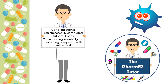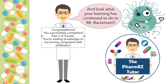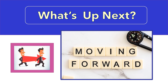Congratulations — you've successfully completed part 2 of 4 parts and you're adding knowledge to becoming competent with antibiotics. This completes the review of gram-positive organisms and their antibiotics of choice. Please join me next time in part 3 of this lecture series, where I'll be taking a closer look at anaerobes and atypical bacteria.